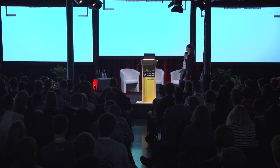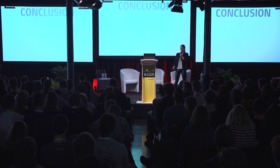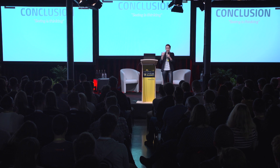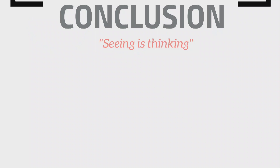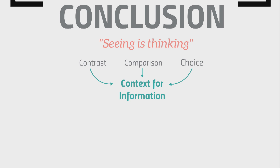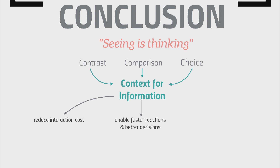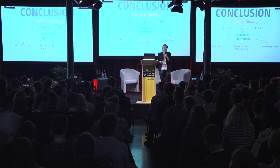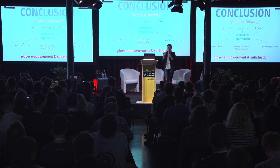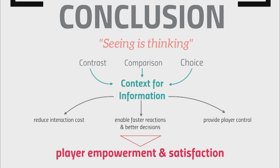To wrap up: "Seeing is thinking" is my key takeaway. If you change the way you show information, people will start to think differently about the subject. We want to create comparison, contrast, and help users make their choice — building context around information. Once we have context, this reduces cognitive interaction cost, enabling faster and better decisions because users feel more informed. Ultimately, this leads to player control, player empowerment, and satisfaction — which is what we want to achieve with a satisfying user experience throughout the game. Thank you.